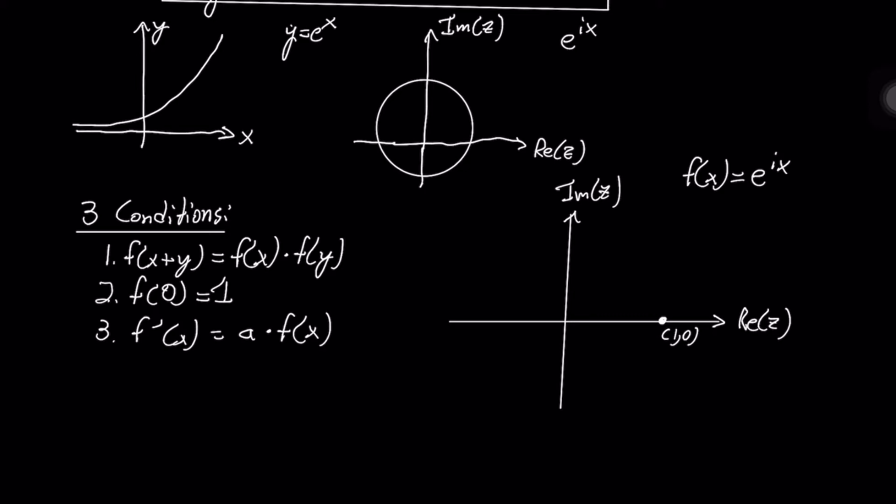So if we look at condition 3 now, we know that f prime of x is some constant times f of x. So if we take f prime of x, we discover that it's i times e to the ix.